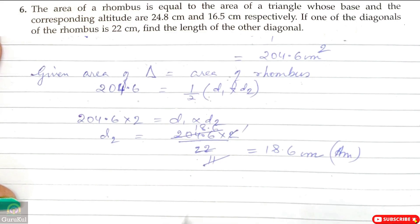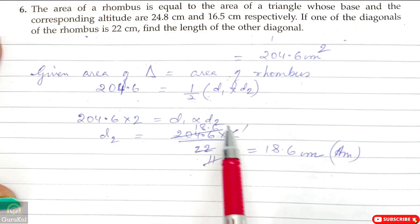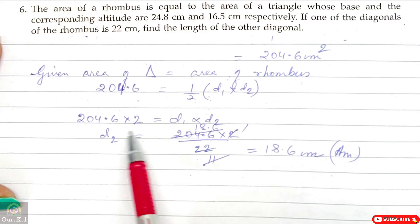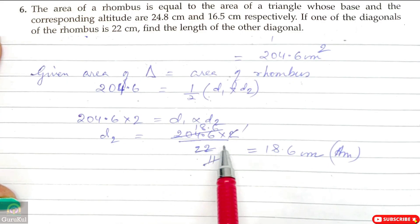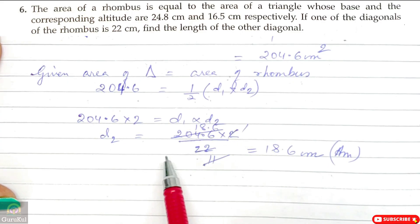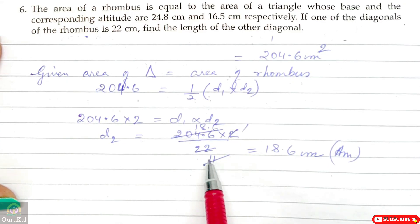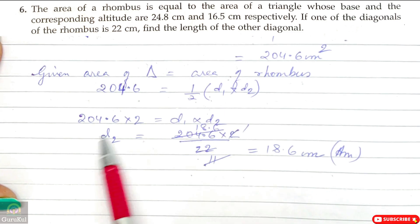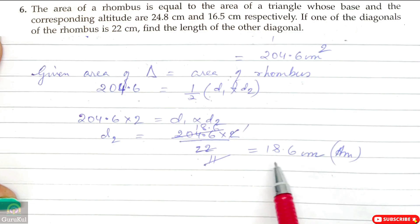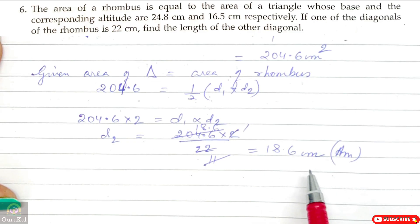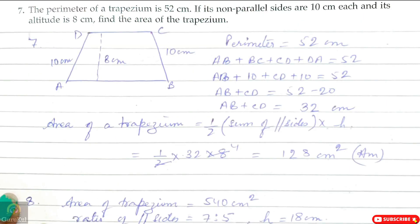We need to find D2. So D2 equals 204.6 into 2 divided by 22, which is the value of diagonal 1. After calculation, D2 = 18.6 cm. And this is the answer.